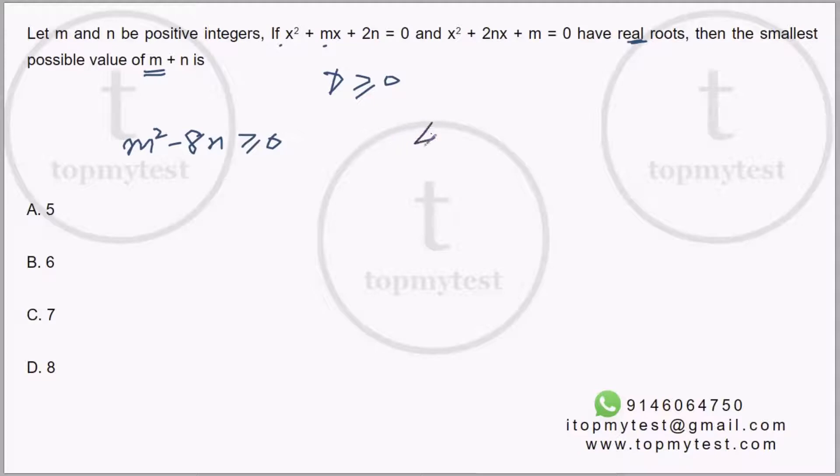So n² should be greater than or equal to m. Okay, this is the second relationship.